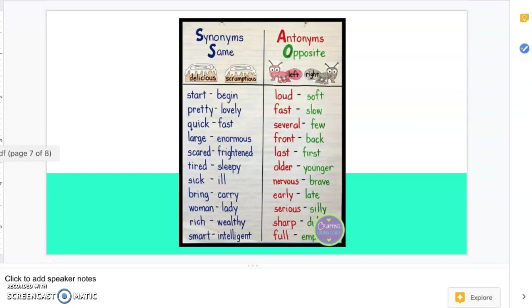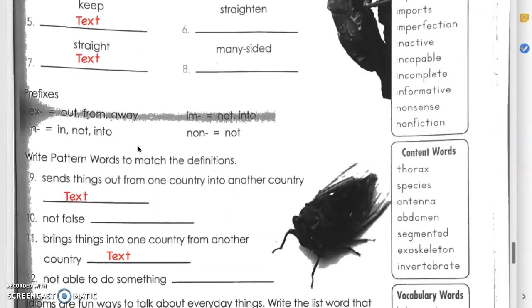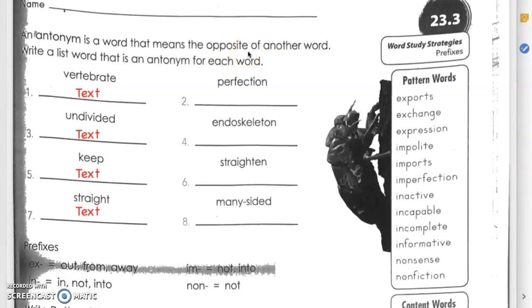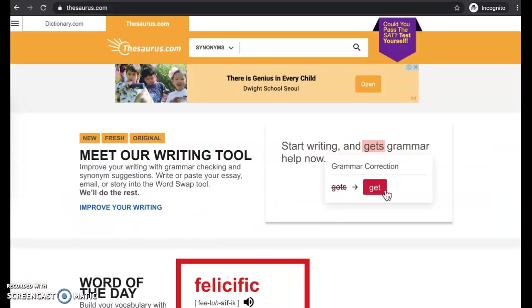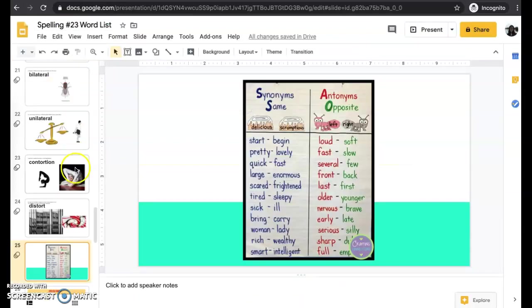Antonyms, on the other hand, are opposite meanings, and these are what we're going to be focusing on today. For example, left and right, loud and soft, fast and slow. Let's go ahead and practice with these first. Page 91 says, an antonym is a word that means the opposite of another word. List a word that is an antonym for each word. For today's spelling book pages, I'm going to be doing the odd numbers with you guys. You're going to do the even numbers, just like math class.